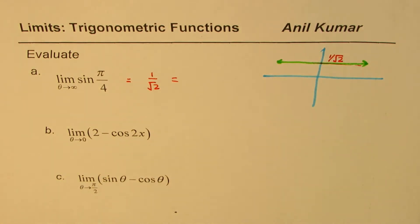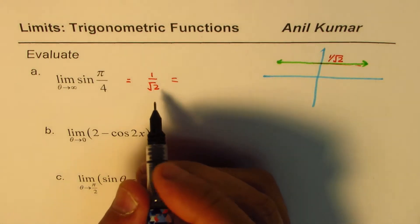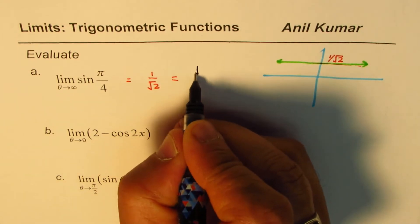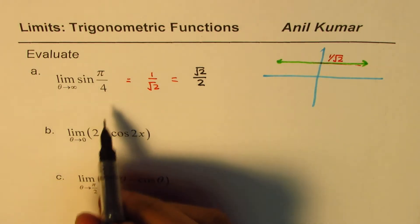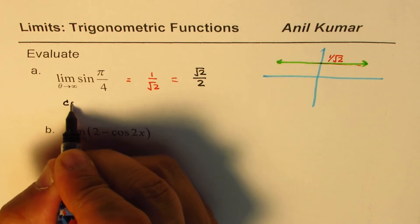So at times you can rationalize this. So multiplying by square root 2, you could also write this as square root 2 over 2. So that becomes the limit for this function. This is a constant function.